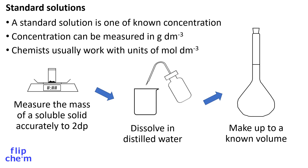A standard solution is one of known concentration. Concentration can be measured in grams per decimetre cubed, though chemists usually work with units of moles per decimetre cubed. A mass of solid is measured using an electronic balance, then dissolved in distilled water, and finally transferred to a volumetric flask and made up to a known volume.